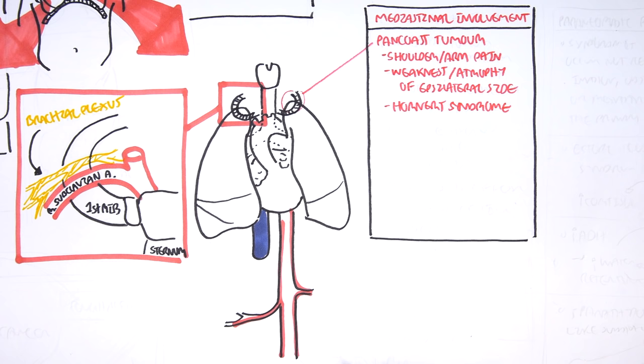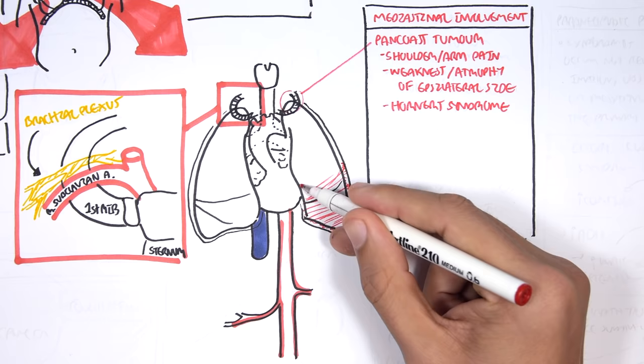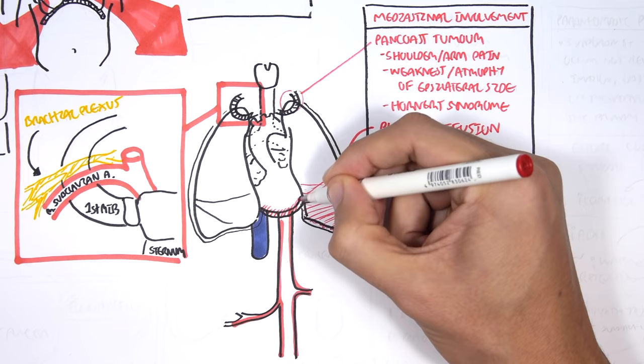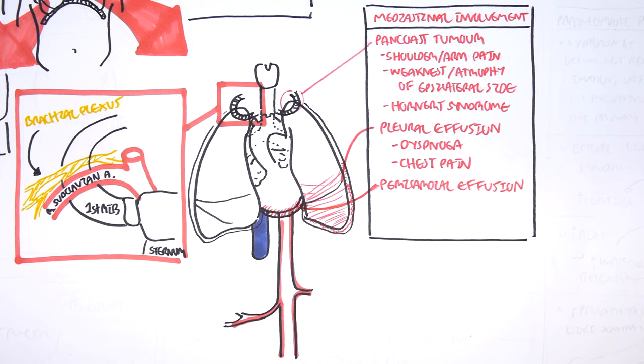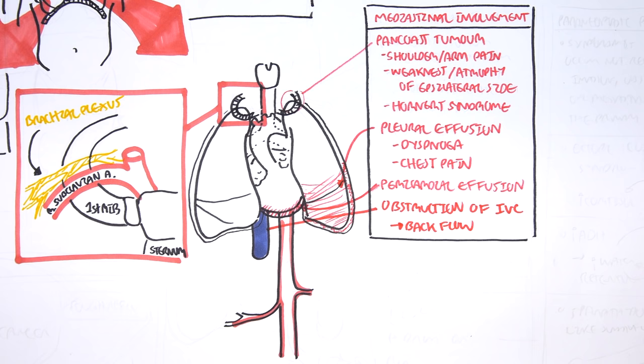Apical lung tumors can also block the sympathetic nerve fiber around this area, causing what's known clinically as Horner's syndrome. Another mediastinal involvement is pleural effusion, which causes dyspnea as well as chest pain. There can also be heart involvement causing pericardial effusion.